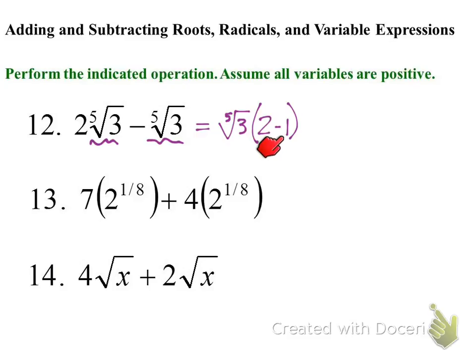We'd have 2 minus 1. So 2 minus 1 we can do in our heads. That's 1 times 5th root of 3. This leaves us with 5th root of 3. Now I'm going to do that one time of that undistribution because notice from the beginning we had 2 of these minus 1 of these gives us 1 of these.